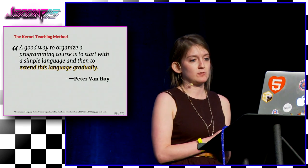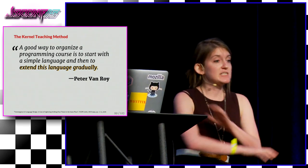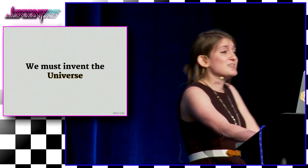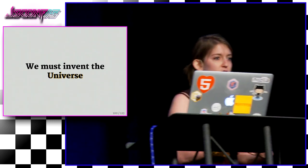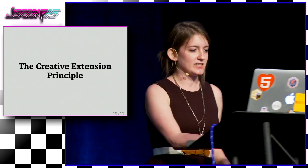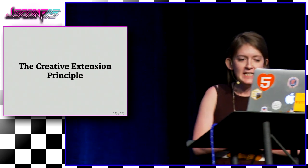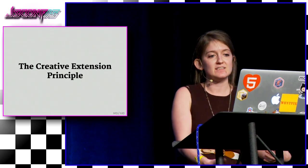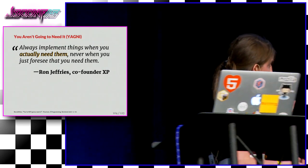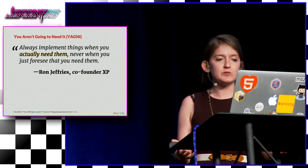Van Roy says a good way to organize a programming course is to start with a simple language and extend that language gradually — the kernel teaching method. In his book, people start at nothing and build everything up: scope, everything. They're inventing their universe — a set of abstractions built because they felt the pain of their absence. The creative extension principle: we build the abstractions we need, the ones that we feel, building the universe most appropriate for the problem we're trying to solve. Ron Jeffries puts it well: don't preoptimize. Always implement things when you actually need them, never when you just foresee that you need them.